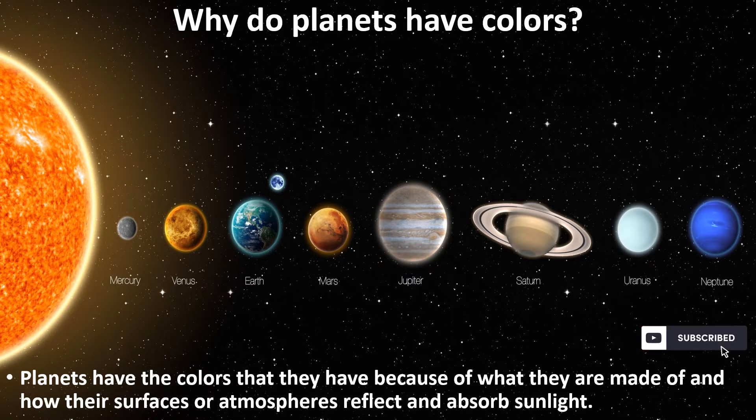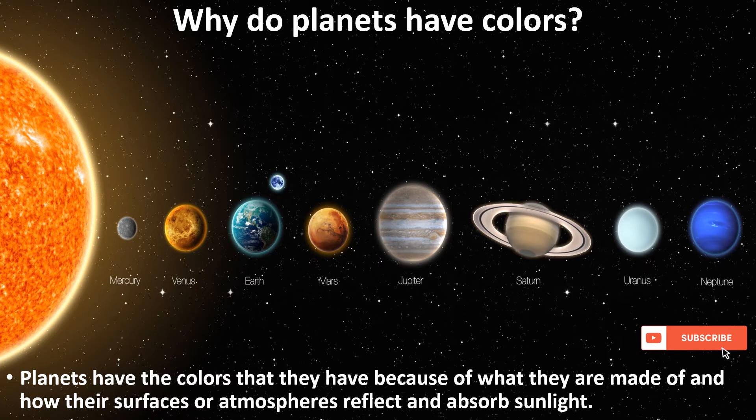Why do planets have colors? Planets have the colors that they have because of what they are made of and how their surfaces or atmospheres reflect and absorb sunlight.